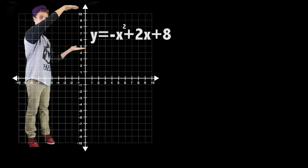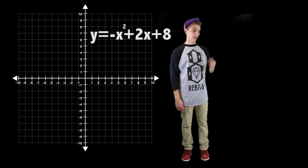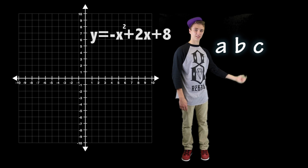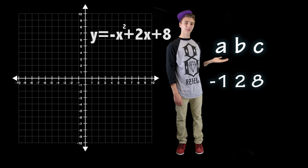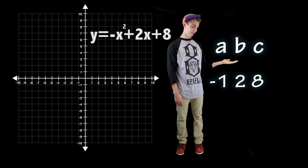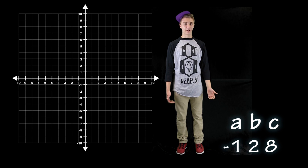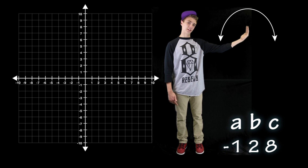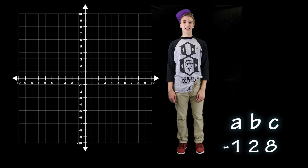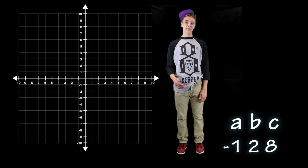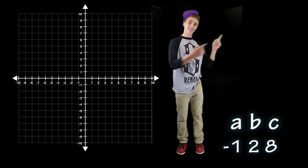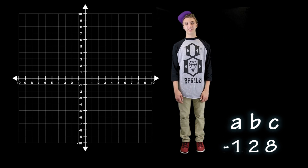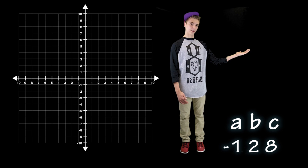To start, we need an equation and a graph. Then we've got to find our a, b, and c values. Our a value is negative 1, b value is 2, and c value is 8. Since our a is negative, our slope is also negative. Then if you multiply a and b, the parabola is going to open downward. And lastly, the c value equals 8, which is our y-intercept.